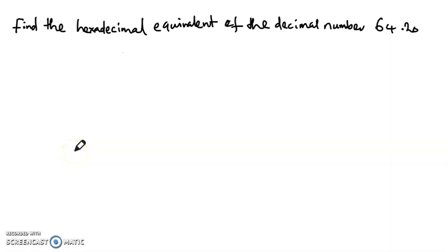Welcome back to our digital electronics class. In today's video we are to find the hexadecimal equivalent of the decimal number 64.20. This is the fourth series of this video. You can watch the previous video on how to find the equivalent of decimal numbers.